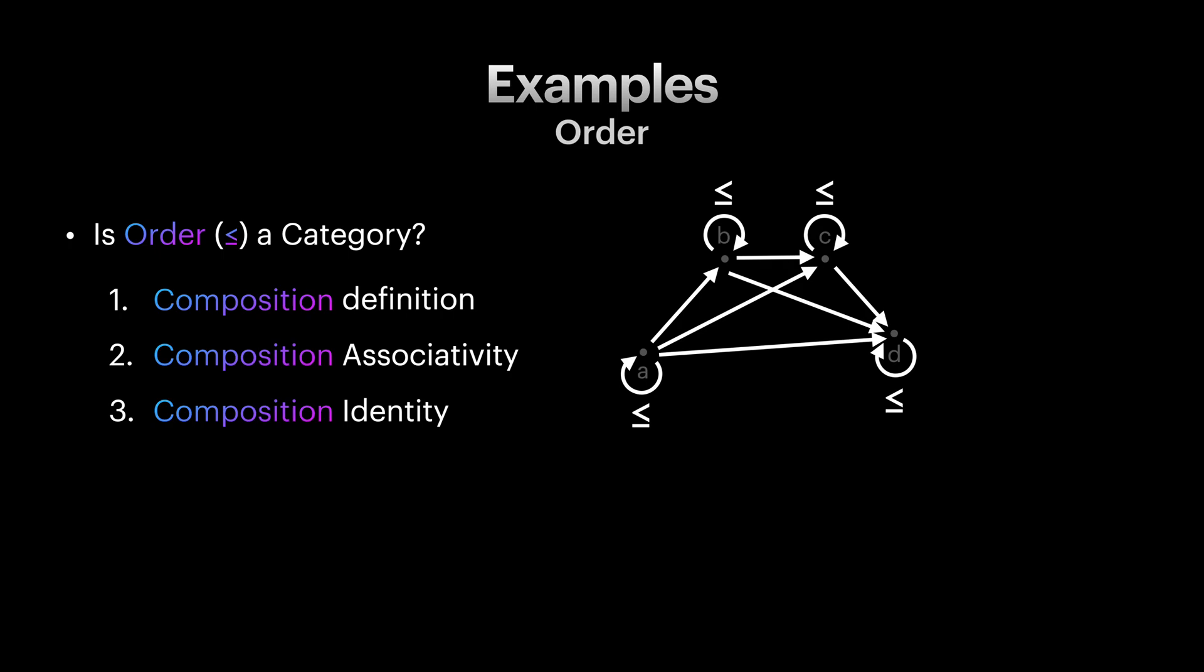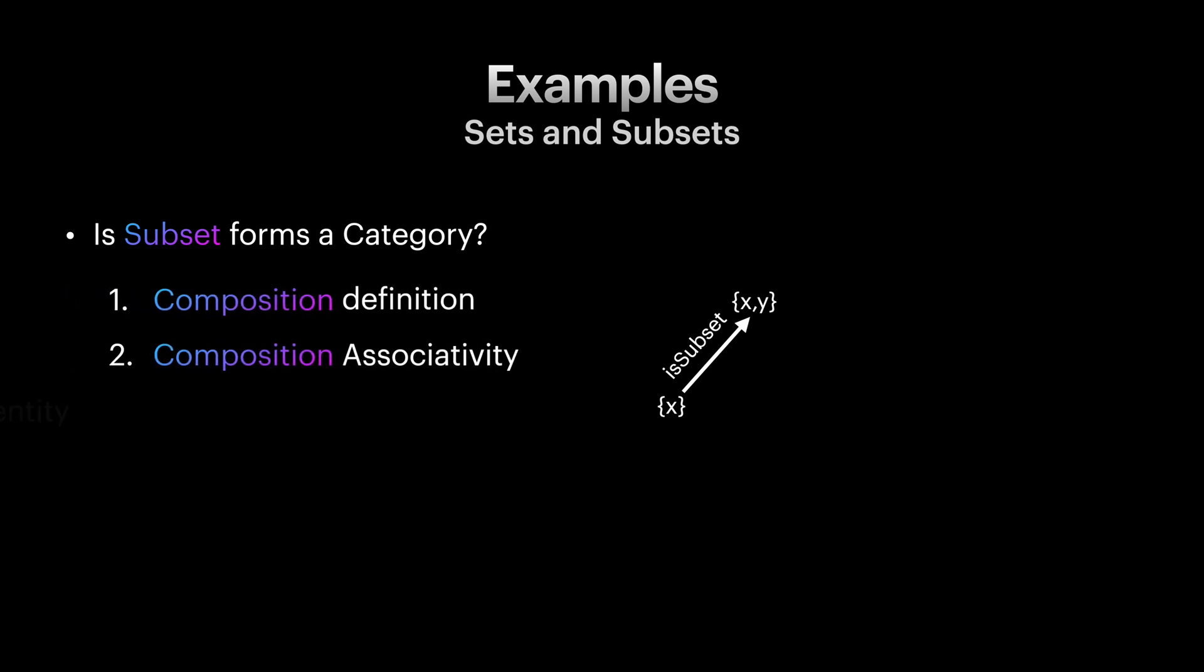Let's look at another example. This time, let's start from a model. Let's think of our objects as sets and relation between them as if a set is a subset of another set. Meaning that all the elements of a set exist in another one. Does this model lead us to a category? Well, we need to check the rules. First, can we compose is-subset relations? Yes. As you see from our example here, set X is a subset of set X, Y, Z. So we can draw an arrow between them.